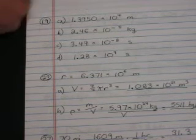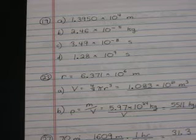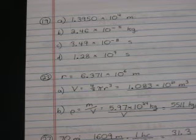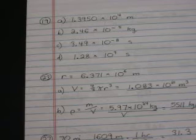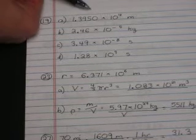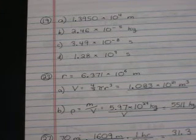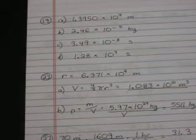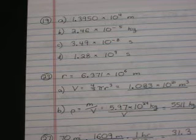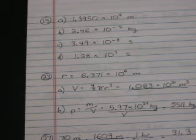You might think, does the zero go there or not? Well, the assumption I've made is that in the way the problem was written, 13,950 meters, that that problem is accurate to that one's place, to that zero. It is an assumption I've made. And so with that assumption, I've kept it right in there in the answer. Part B, 2.46 times 10 to the negative 5 kilograms. C, 3.49 times 10 to the negative 8 seconds. And D, 1.28 times 10 to the ninth seconds.